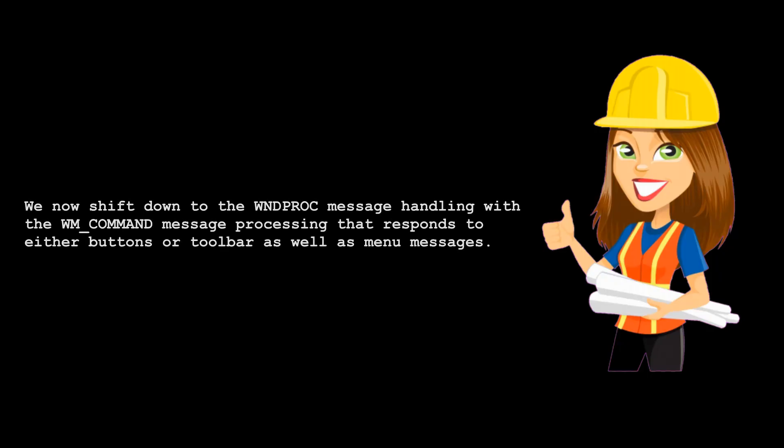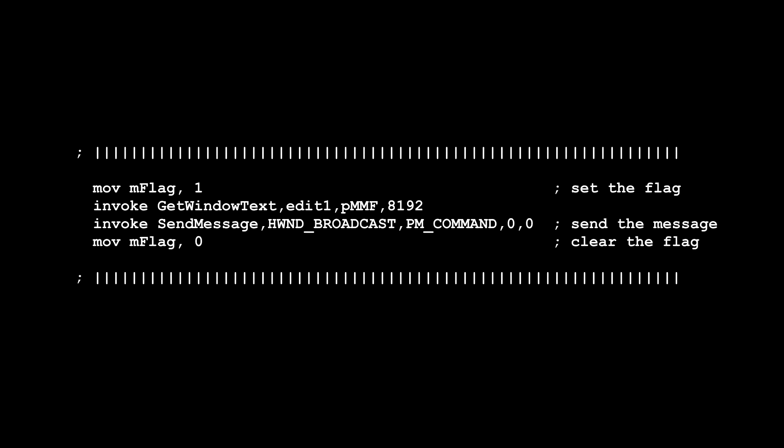We now shift down to the WinProc message handling with the WM_COMMAND message processing that responds to either buttons, toolbar, or menu messages. The flag is set so that the app sending the message does not send it to itself. The text to write to the memory mapped file is retrieved from the edit control and written directly to the memory mapped file. The following SendMessage function uses the system-wide global handle HWND_BROADCAST, so that the message can be received by an external app designed to listen for it. When SendMessage returns, the flag is set back to zero, which allows normal operations with the private message processing.